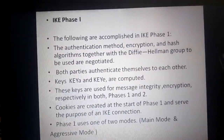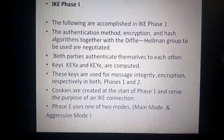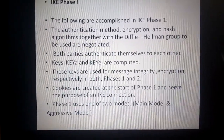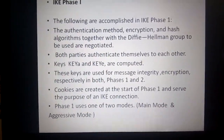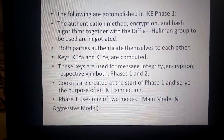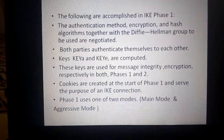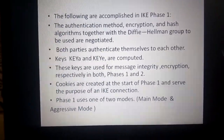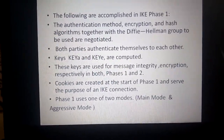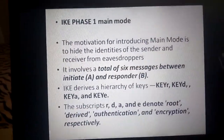The following are the steps in IKE Phase 1: the authentication method, encryption, and hash algorithm, together with the Diffie-Hellman key exchange protocol, are agreed upon. Both parties authenticate themselves to each other. Keys Key_A and Key_E are computed and used for message integrity and encryption respectively, in both Phase 1 and Phase 2. Cookies are created at the start of Phase 1 and used for the IKE connection. Phase 1 uses one of two modes: main mode or aggressive mode.